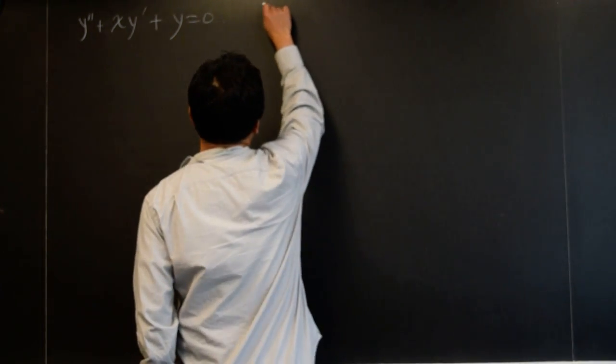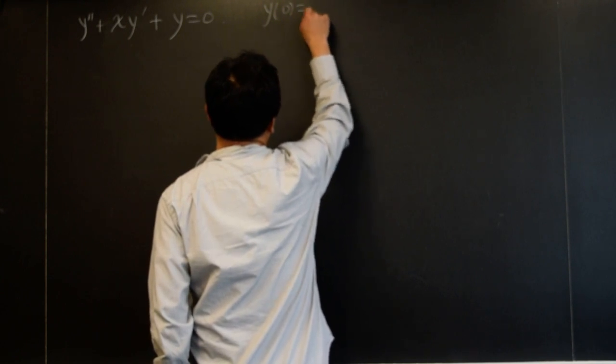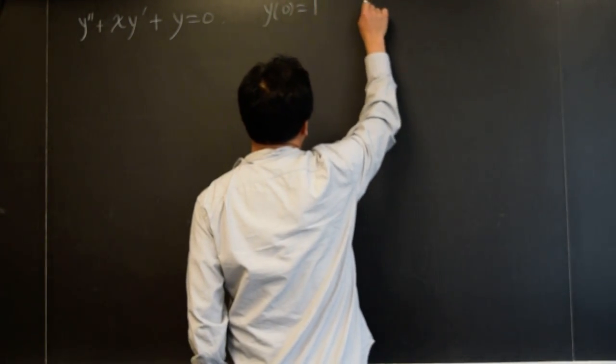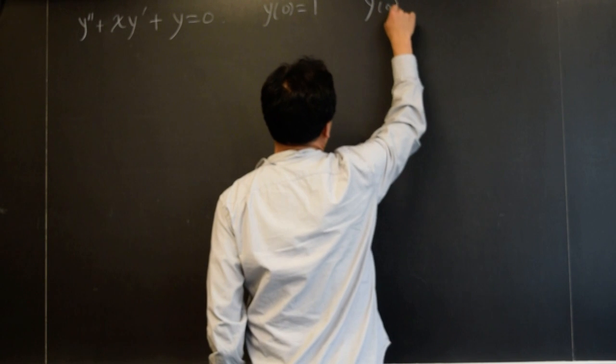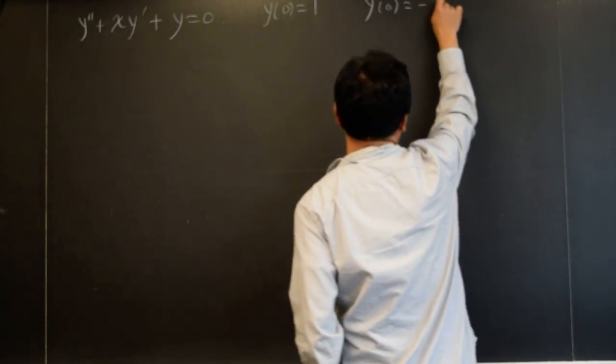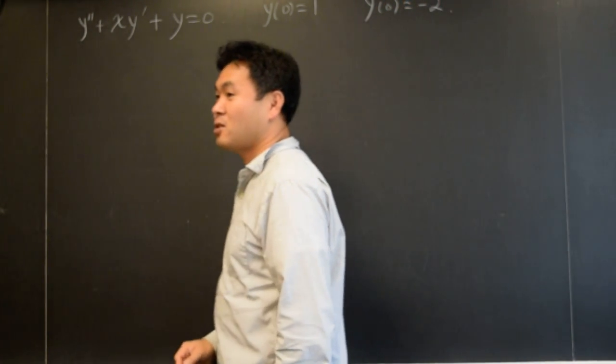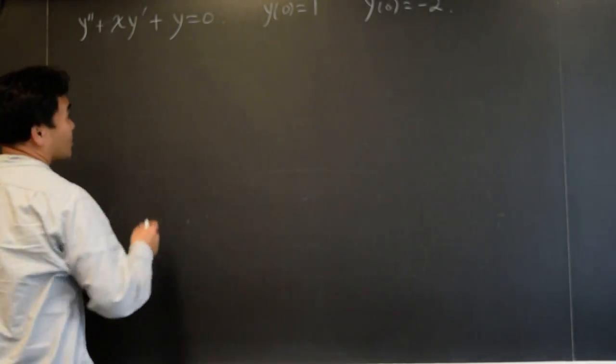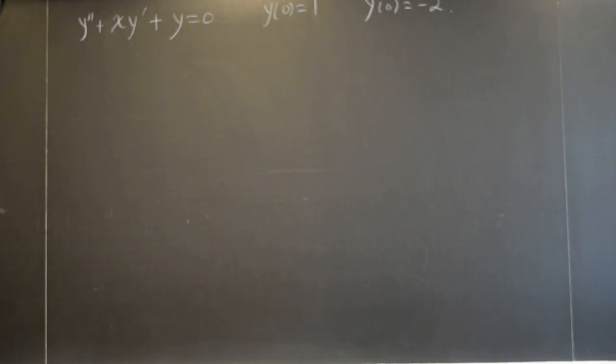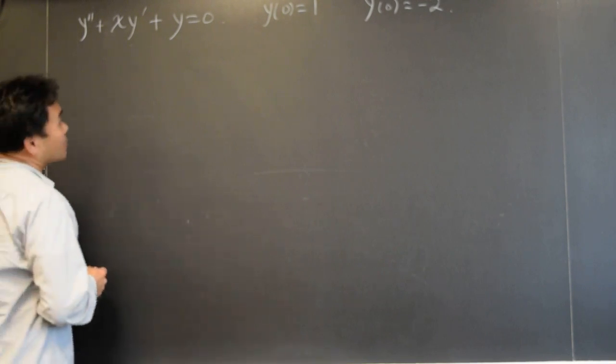And then y of zero is one, y prime of zero, and say negative two. And find the power series solution. And let's say we're just trying to find the first five. Okay? Alright.